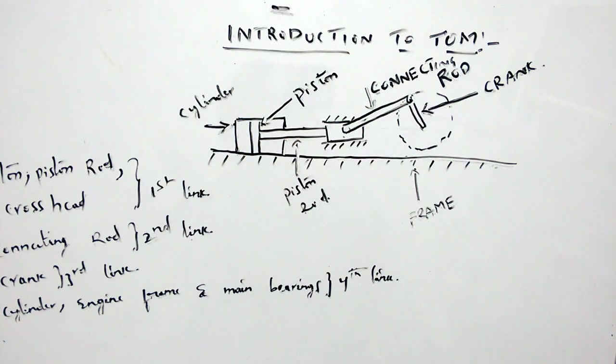This kinematic link must be a resistant body and need not be a rigid body. The difference between a rigid body and a resistant body is: if the deformation in the body is zero, then it is called a rigid body. If the deformation produced in a body is negligible, then it is called a resistant body.